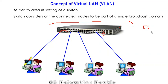If a user sends a frame, it will be received by the switch, and the switch will send a copy of that frame to all remaining nodes connected with the same switch. This is the default operation of a switch.